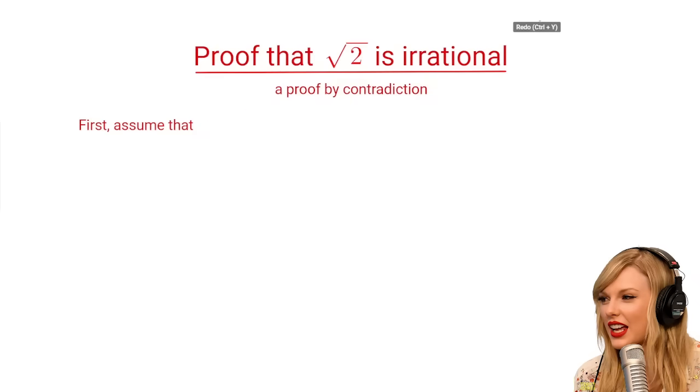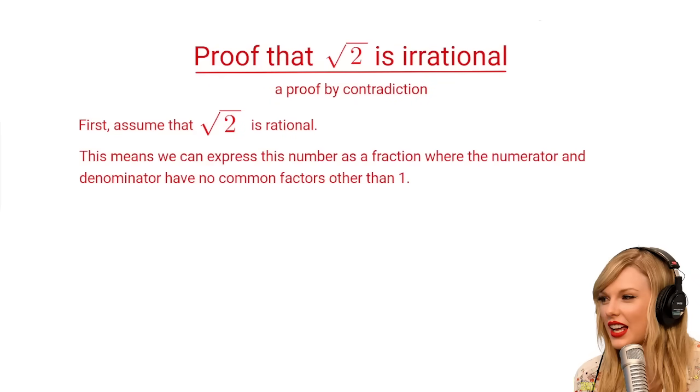Let's assume, for the sake of contradiction, that the square root of 2 is rational. This means that it can be expressed as a fraction in its simplest form, where the numerator and denominator have no common factors other than 1.